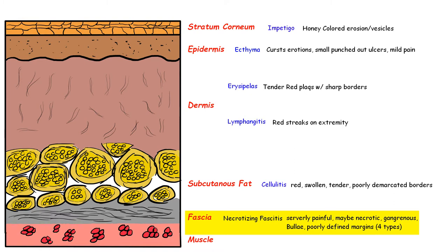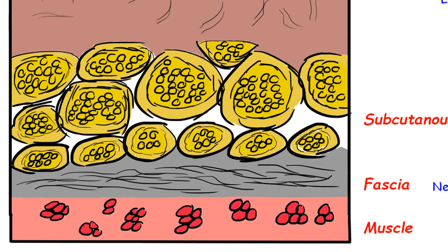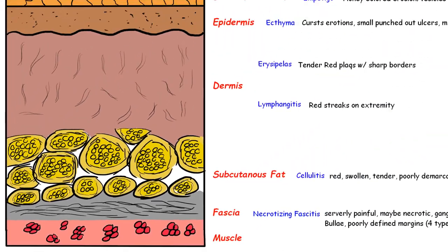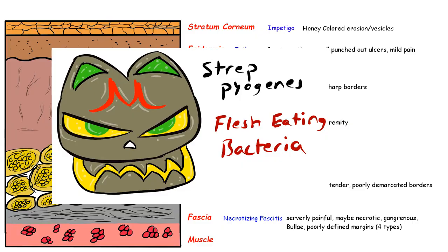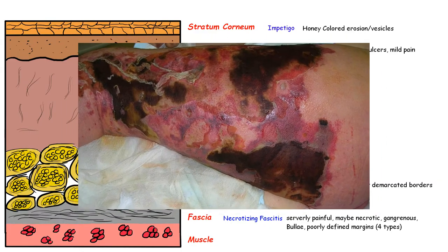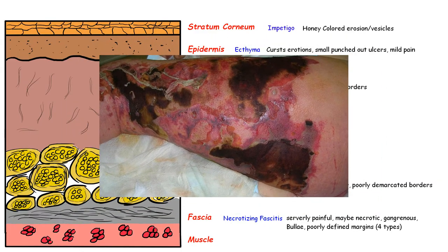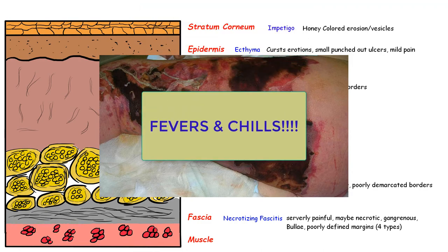GAS is one of the most common causes of necrotizing fasciitis. This infection leads to the death of the fascia - the tissue that lines and separates the muscle - which is why strep pyogenes is known as flesh-eating bacteria. It happens in immunosuppressed people, diabetics, and trauma patients. The infected area will look erythematous and gangrenous with bullae present, and patients will have fevers and chills - it's actually very painful.